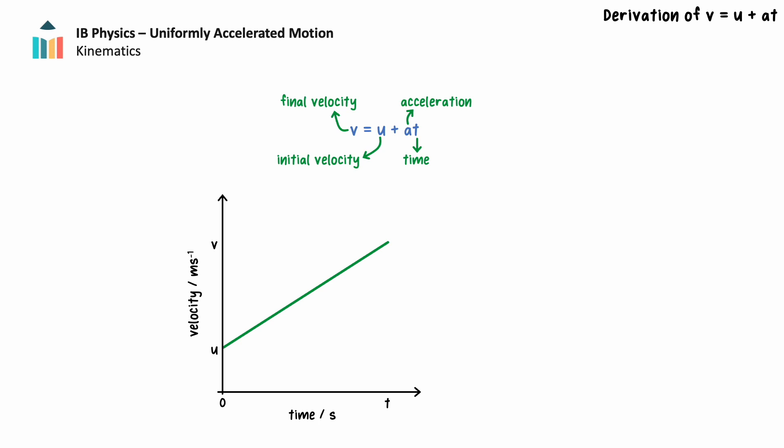We'll use a velocity-time graph to derive this formula. On a velocity-time graph, uniform acceleration is a straight line. The gradient of this line is the acceleration of the object. Gradient is calculated as rise — change in the vertical axis, in this case change in velocity — over run — change in the horizontal axis, in this case change in time.